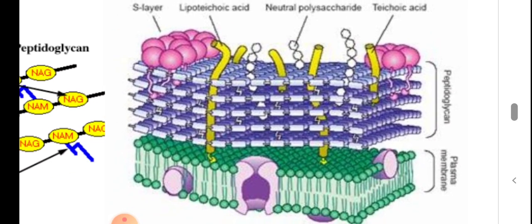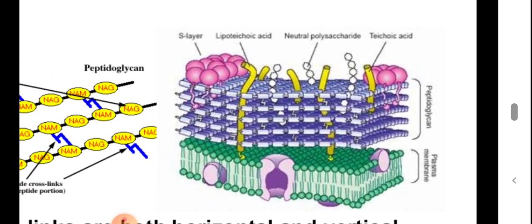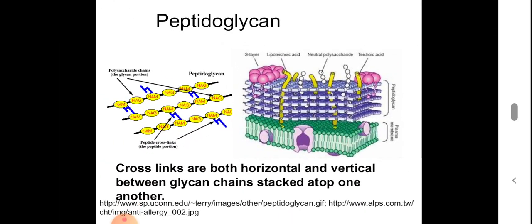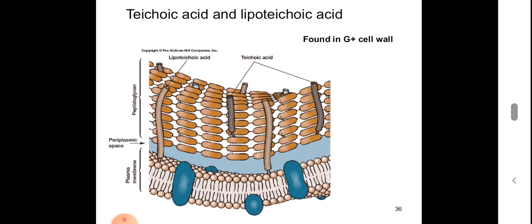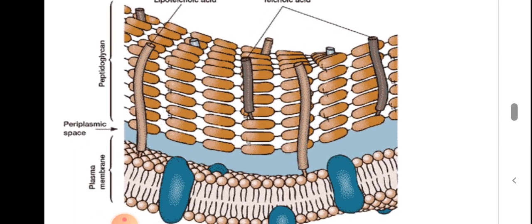This is the bacterial envelope of a gram-positive bacterium. You can see the inner cell membrane, that is the plasma membrane, and the outer peptidoglycan cell wall. Outer to the cell wall there is no additional membrane, since this is a gram-positive bacterium. In between the peptidoglycan layer, teichoic acid and lipoteichoic acids are also present. The periplasmic space is the space between the plasma membrane and the peptidoglycan layer, that is between the plasma membrane and the cell wall.